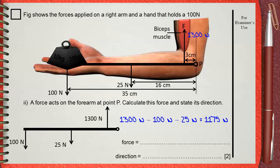Applying our rules, this force must be 1300 newtons minus 100 newtons (which is downwards) minus 25 newtons (which is also downwards). So our force will be 1175 newtons downwards. Now and only now we can say that the arm is at equilibrium.